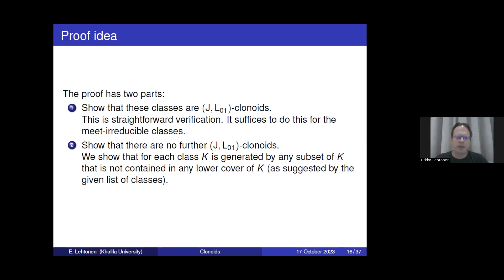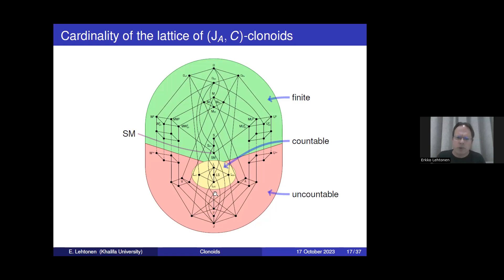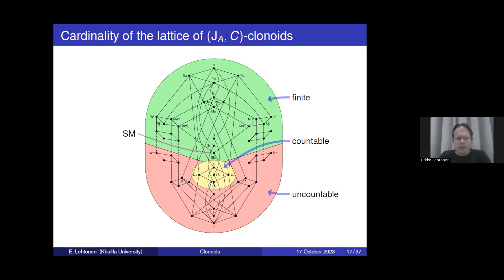So this is how we described the clonoids arising from the linear functions. Once we have described the ones corresponding to L01, we can also get the superclones because of the monotonicity property of function class composition. It follows that if we take any superclone of L01, the corresponding clonoids must be among those we have described, and it is then just a matter of identifying which clonoids correspond to the superclones.